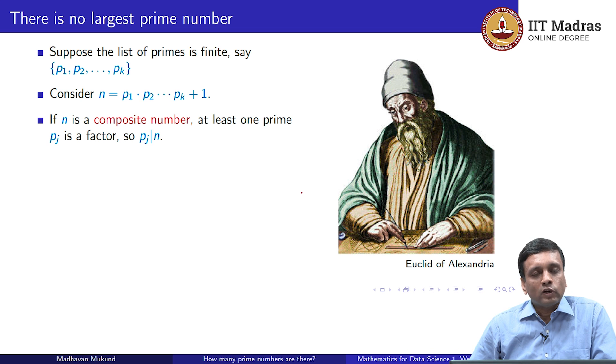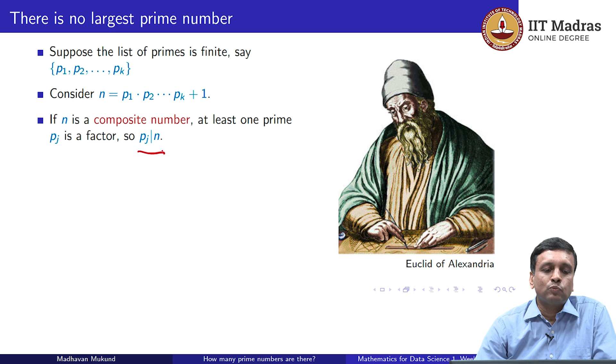Now, the question is what is the status of n? Since we have assumed that the list of primes is finite, n must be a composite number because this is not one of the primes that we had before. It is bigger than all of them because it is the product of all of them plus 1. Now, since it is a composite number, it must have a factor other than 1 and itself. And because we have listed out all the primes, one of the primes among them must be a factor. Let us assume that pj is a factor. So, pj divides n. There is 1 in this p1 to pk, there is a pj which divides n.